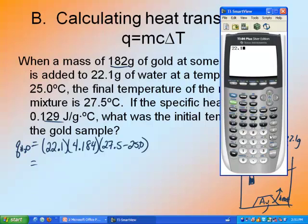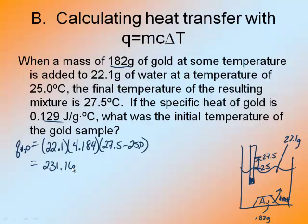22.1 times 4.184 times 27.5 minus 25, final minus initial. It's 231.166 joules. Now here's something that's very important. All of the heat that went out of the gold went into the water. So the heat exited the gold, which means the gold lost heat, which means the gold should be negative. The water gained the heat, so it's going to be positive. So they're exactly opposites to each other.